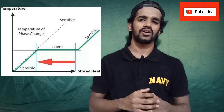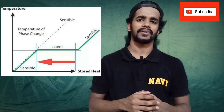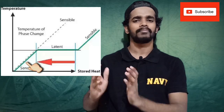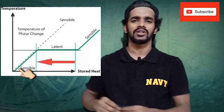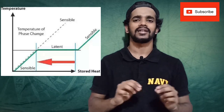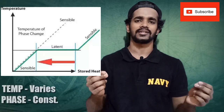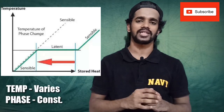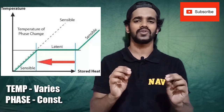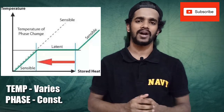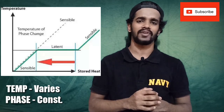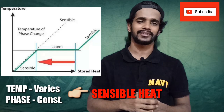Now if we again cool down the ice, the temperature keeps on dropping from minus 1 to minus 2, minus 2 to minus 3, and so on. The temperature is not constant here, but the phase remains constant — solid phase to solid phase. Ice remains in the form of ice. There is no change of phase but the temperature keeps on varying. That's your sensible heat.